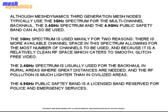Although Mesh Dynamics' third generation mesh nodes typically use the 5 GHz spectrum for the multi-channel backhaul, the 2.4 GHz spectrum and the 4.9 GHz public safety band can also be used. The 5 GHz spectrum is used mainly for two reasons: there is more available channel space in this spectrum, allowing for the most number of channels to be used, and because it is a relatively clean RF space which caters to smooth, glitch-free video.